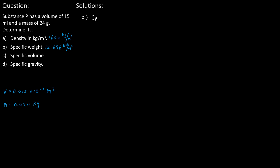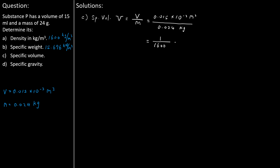Part C asks about the specific volume. Specific volume nu equals volume V divided by mass M. Plugging in volume 0.015 times 10 to the power of minus 3 cubic metres and mass 0.024 kilograms, we get specific volume nu equals 1 per 1,600, which is 0.625 times 10 to the power of minus 3 cubic metres per kilogram.